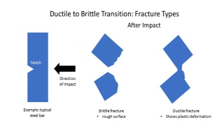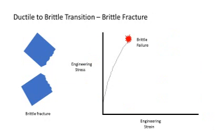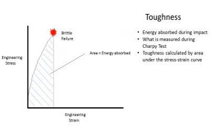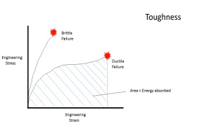Here are basic images showing the difference between brittle and ductile fracture. Brittle fracture gives a rougher surface, typically characterized by a more sudden and catastrophic break. Ductile fracture metal shows necking — it narrows as the material plastically deforms, absorbing some of the energy from the impact. Note the difference between the engineering stress-strain curve of brittle versus ductile fracture. The area under the stress-strain curve is the energy absorbed during impact, called the material's toughness. This is what is measured during the Charpy Impact Test.